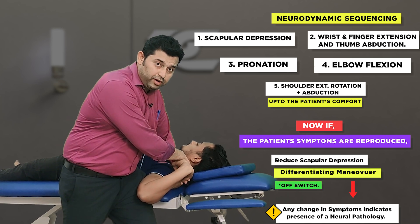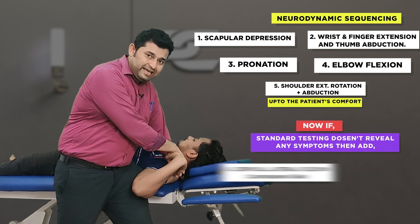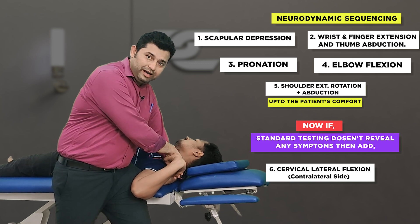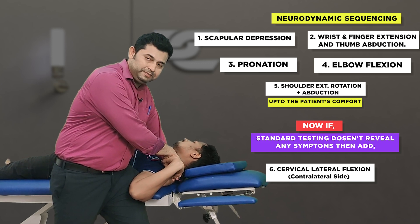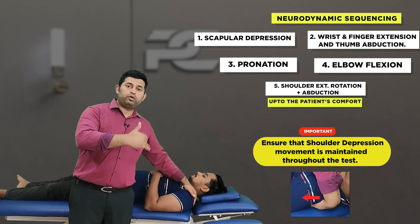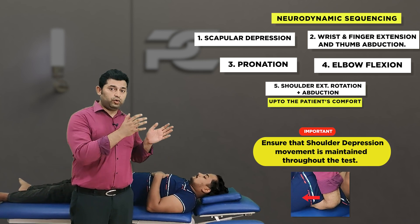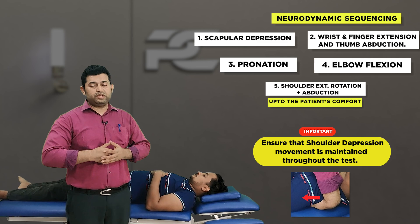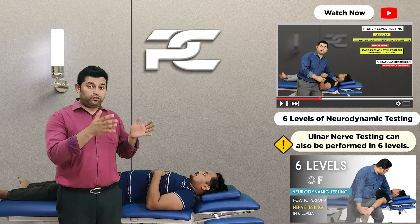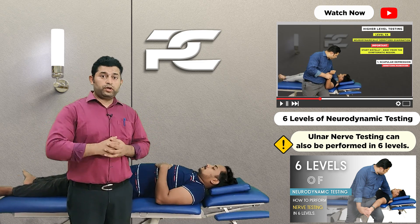If the standard testing does not reveal any reproduction of symptoms, the therapist can sensitize the test by asking the patient to side bend to the contralateral side. Ensure that the shoulder depression movement is maintained throughout the test and is only released during the differentiating maneuver.